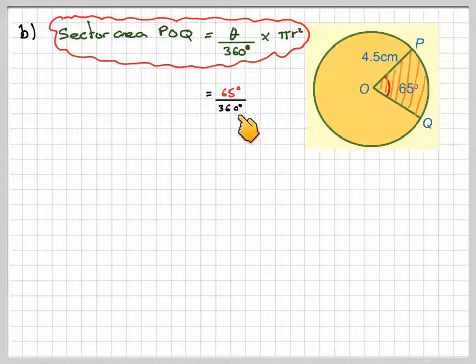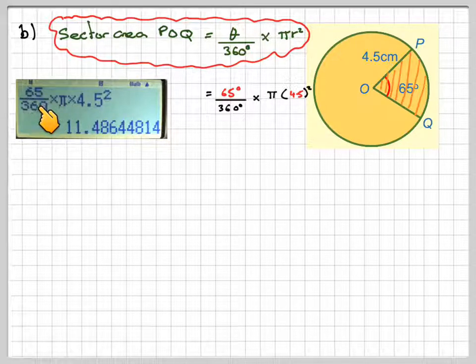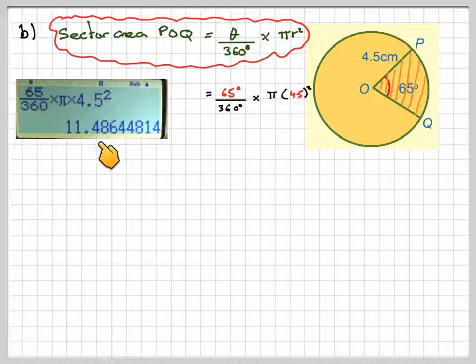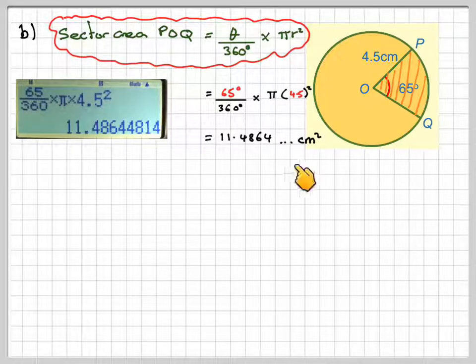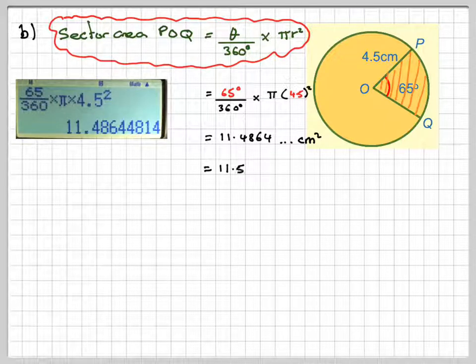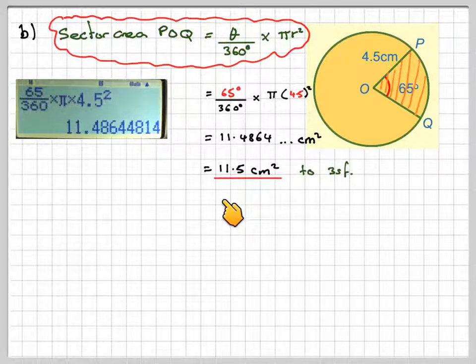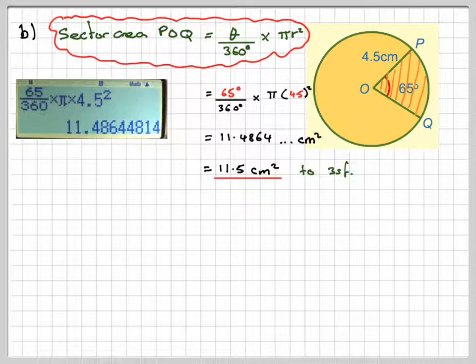So that'll be 65 over 360 times π times 4.5 squared. You can work that out on the calculator using the fraction button. That gives 11.4864 centimetres squared. To 3 significant figures, that 8 will make that 4 a 5, so the final answer is 11.5 centimetres squared.